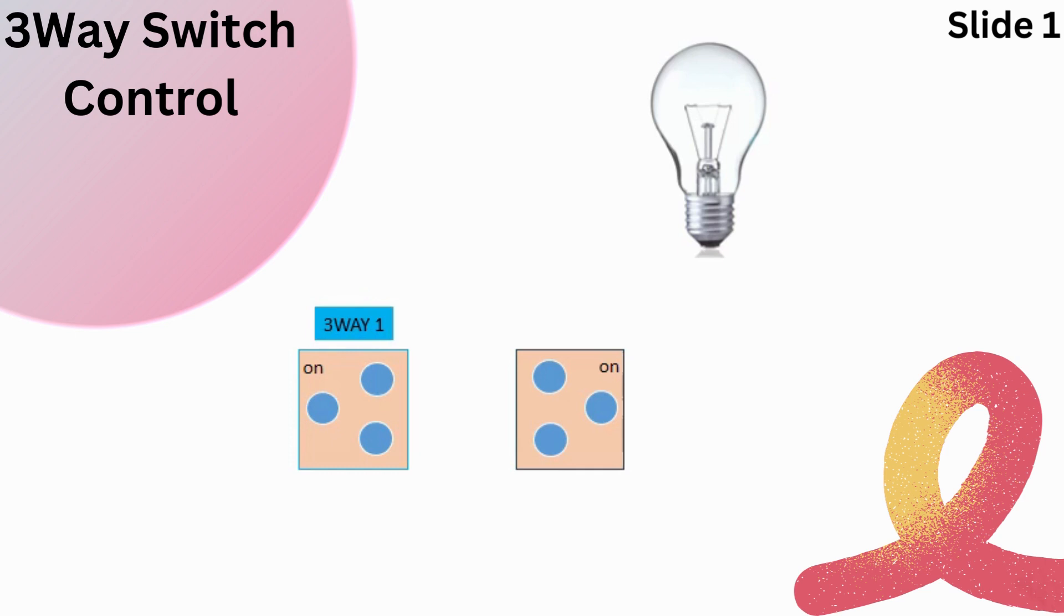The common terminal on switch 1 is connected to one of the traveler terminals, which is a wire that runs to the second switch.